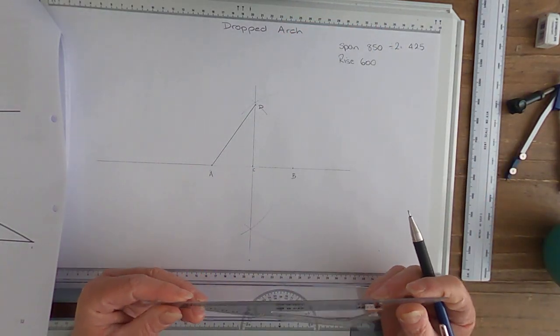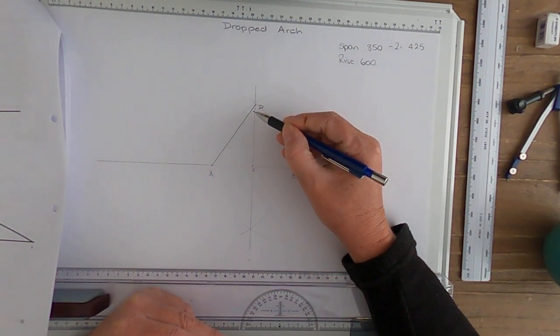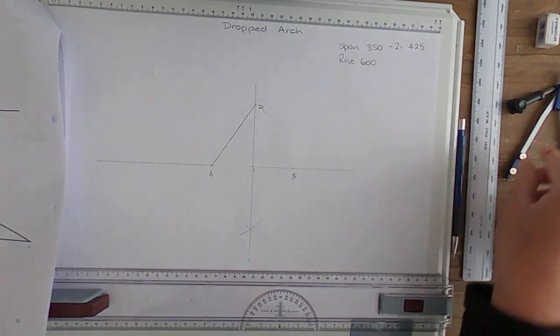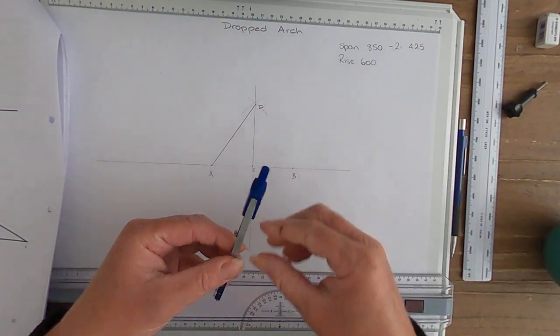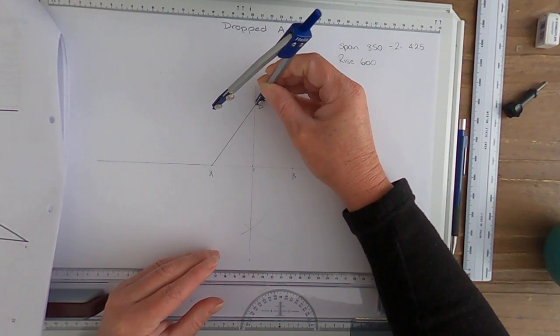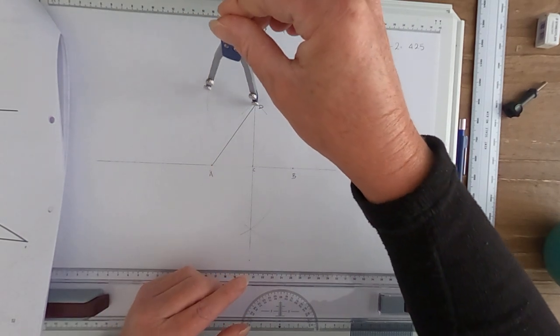Now step 6 says bisect the line A to D to mark on the baseline at E. So first we bisect our A to D line. Remember when we bisect, we always go over halfway. Scribe a mark on either side.